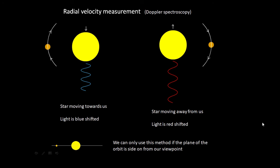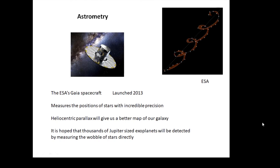This is called radial velocity measurement or Doppler spectroscopy. I've actually done another video about the Doppler effect—see if you can find that. Astrometry: astro is stars, metric means measuring, and this means actually measuring the position of the star directly.